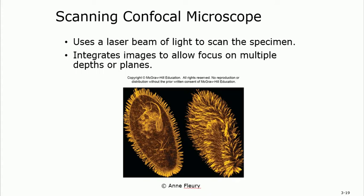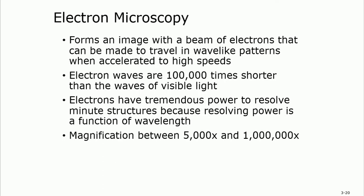The scanning confocal microscope works similarly to a CT scan — just as a CT gives you different cross-sectional slices, the confocal microscope scans around and gives you different depths. It takes scan after scan after scan and compares them to produce a three-dimensional depth image.